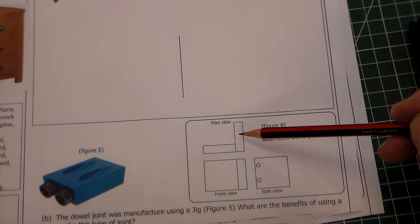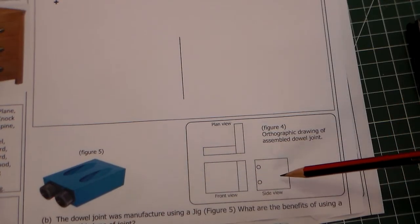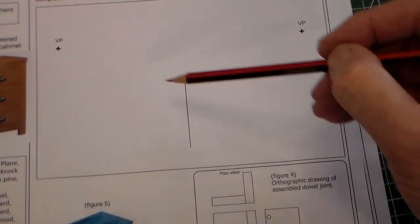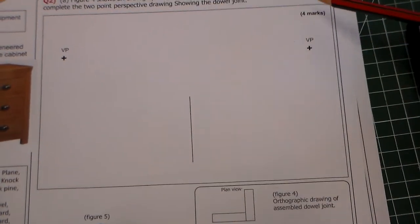So the orthographic drawing has a plan view, that's the top view, has a front view there and has a side view. What you have to do is we've got this line here to help you start and we've got two VP vanishing points. So it's a four mark question.